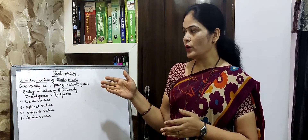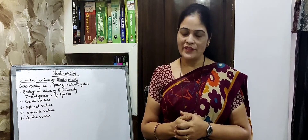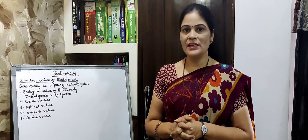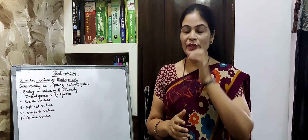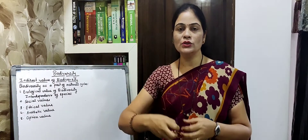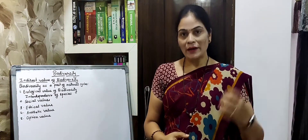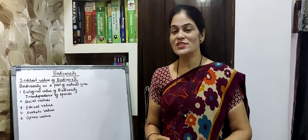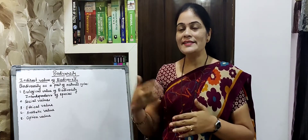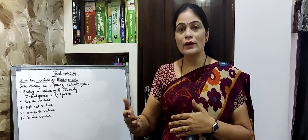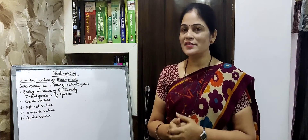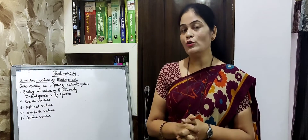In this video we are going to cover the indirect value of biodiversity. In the last video we discussed the direct value of biodiversity — what we collect directly from biodiversity, environment and nature. We discussed all these values that are not seen values; we do not see that these are related to biodiversity, but those are the indirect values of biodiversity.